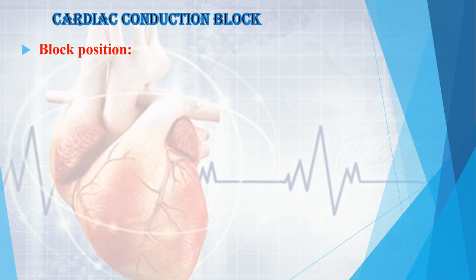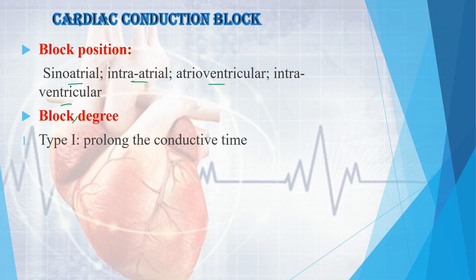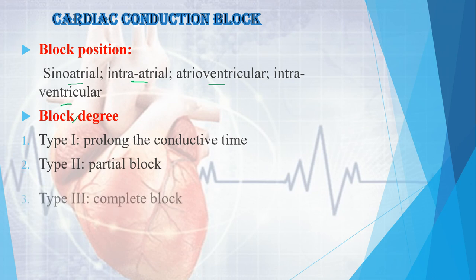Classification of cardiac conduction block: on the basis of block position, it is categorized into sinoatrial block, intraatrial block, atrioventricular block, and intraventricular block. On the basis of degree of block, it is classified into type 1 (prolonged conduction time), type 2 (partial block), and type 3 (complete heart block).